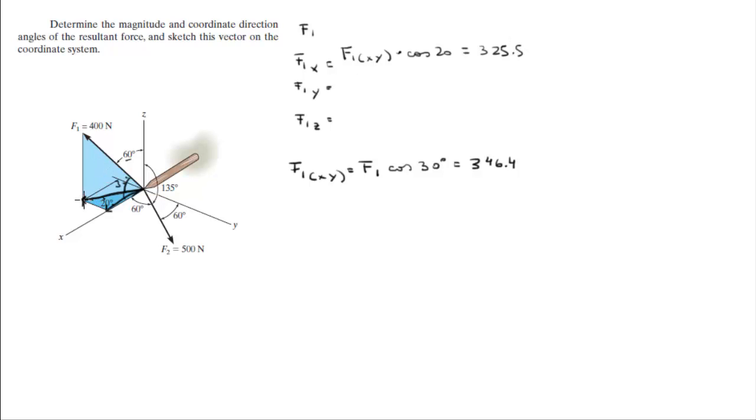And to find the Y, which is this vector, you do the projection times the sine of 20 and it gives you 118.5, but it's negative because the Y is going in this direction. To find the Z we find this vector here which is F1 sine of 30, this angle we calculated right here, which is equal to 200.